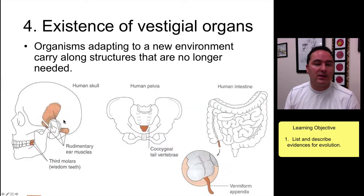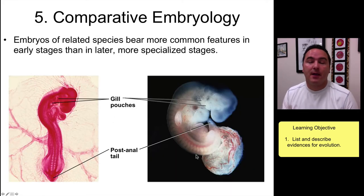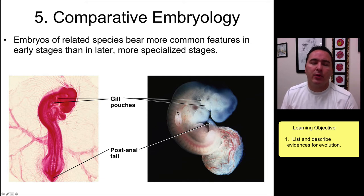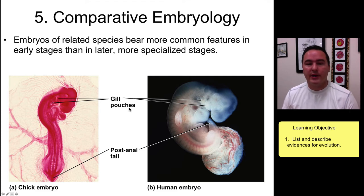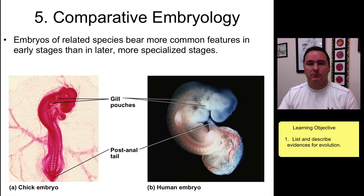Number five: comparative embryology. When you look at organisms in their early embryological stages, you see that they are very similar. For example, the organism on the left is a chicken and the organism on the right is human, but in early embryological stages we have gill pouches that are similar, post-anal tails that are similar, and we look very similar.